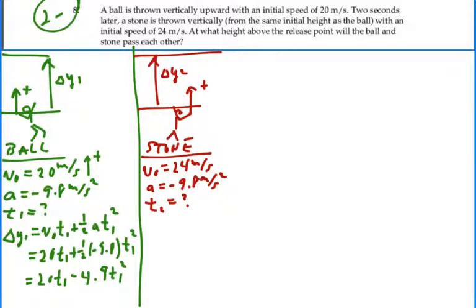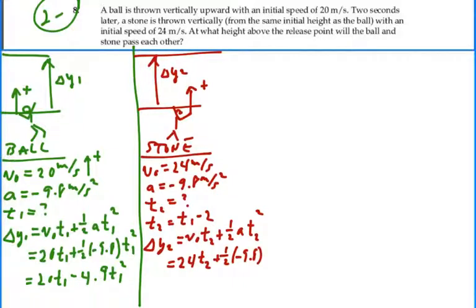I'll have some kind of time t2, which we don't know. But we do know that it was thrown two seconds after the ball. So t2 will actually equal t1 minus 2 because it's two seconds less. Displacement delta y2 will equal initial velocity times time plus one-half acceleration times time squared. So that's going to be 24t2 minus 4.9t2 squared.